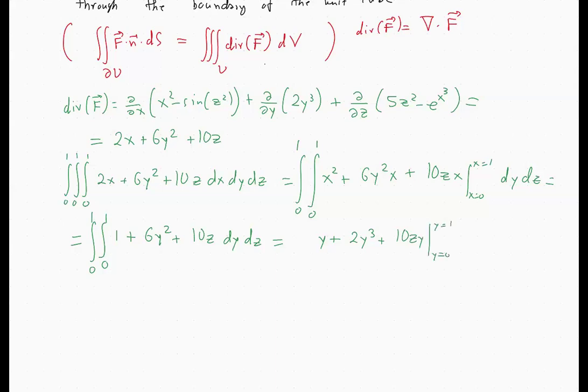So this will be the integral from 0 to 1 of 1 plus 2 plus 10z—again, a mistake here, this is not dx, this is dz. Sorry about this. And finally we have to take this last antiderivative, so it will be 3z plus 5z squared, and we want to go from 0 to 1, which will give us simply 8. And that's it.